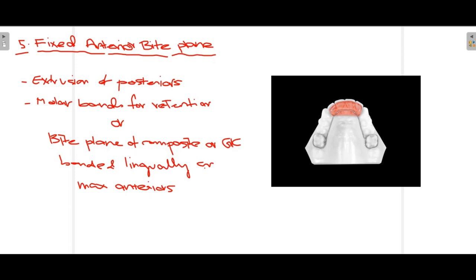The final fixed appliance is the fixed anterior bite plane, similar to the removable version but fixed in place. Its main purpose is extrusion of the posterior teeth. There are two types: one is fixed via bands applied to the molars, and the other consists of bite planes made of composite or GIC, bonded on the lingual surfaces of the maxillary incisors to achieve posterior teeth extrusion.